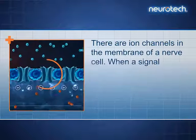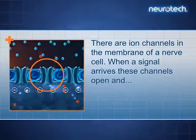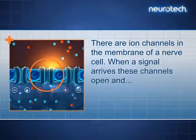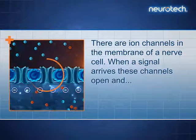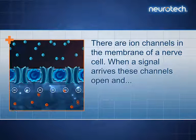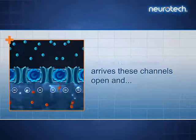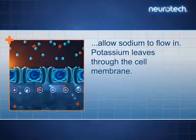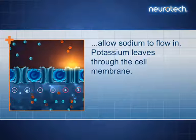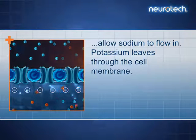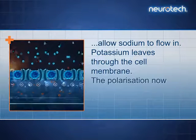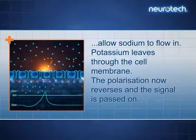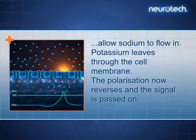There are ion channels in the membrane of a nerve cell. When a signal arrives, these channels open and allow sodium to flow in. Potassium leaves through the cell membrane. The polarisation now reverses and the signal is passed on.